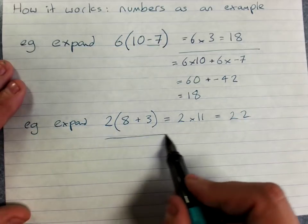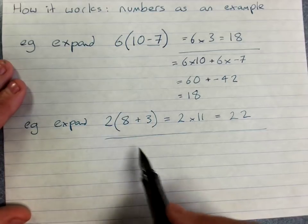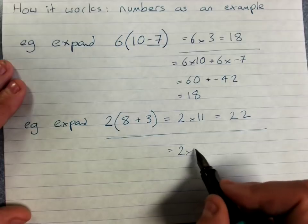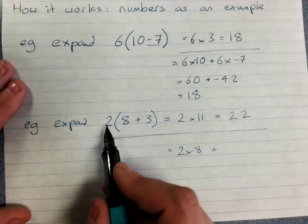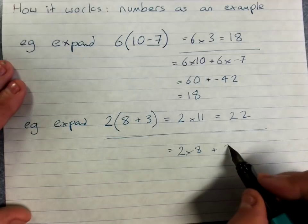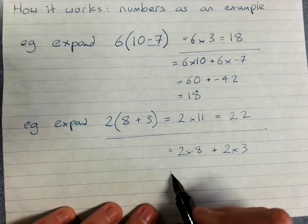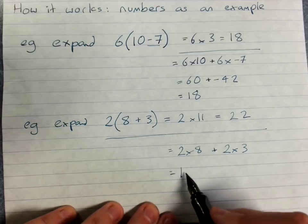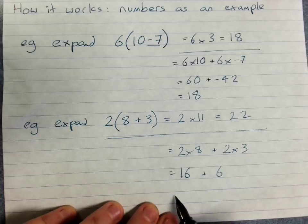But the other way that I want to show you also works is I'm going to do 2 times 8, so 2 times the first thing in the brackets, plus 2 times 3, 2 times the second thing in the brackets. 2 times 8 is 16, plus 2 times 3 is 6. 16 plus 6 is 22.